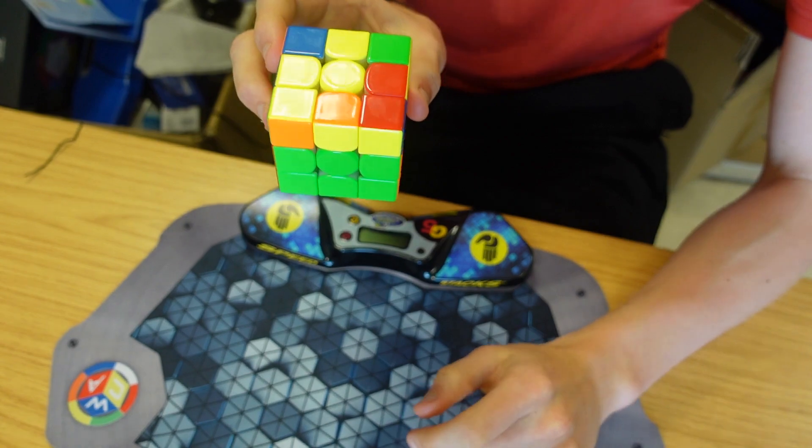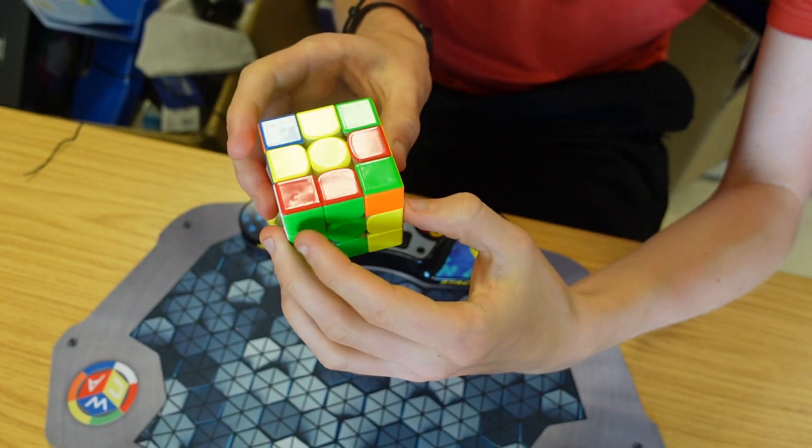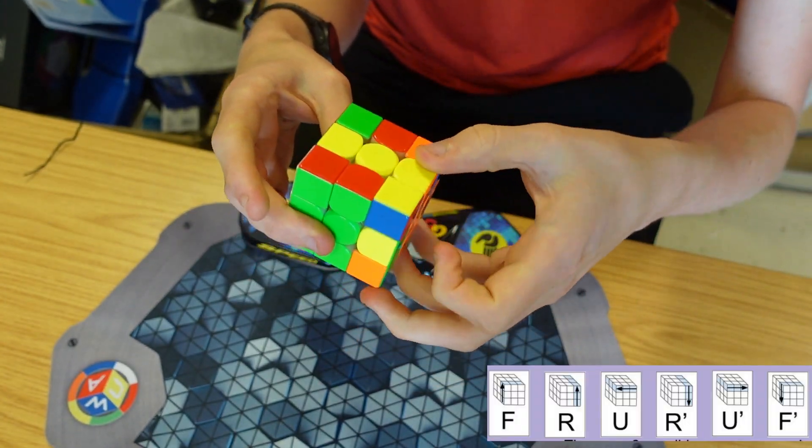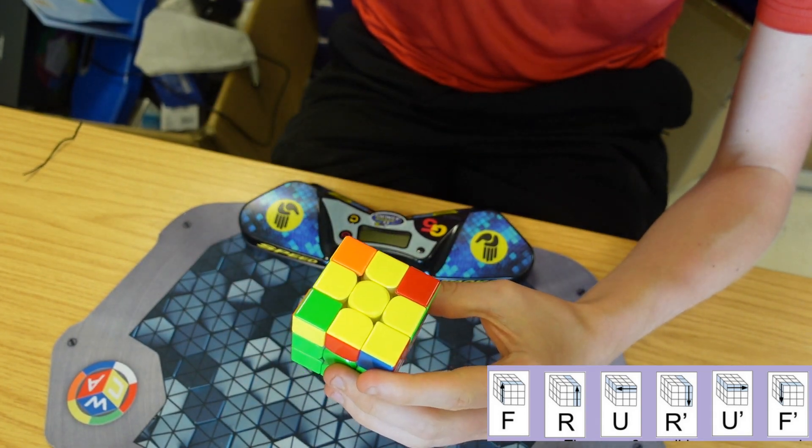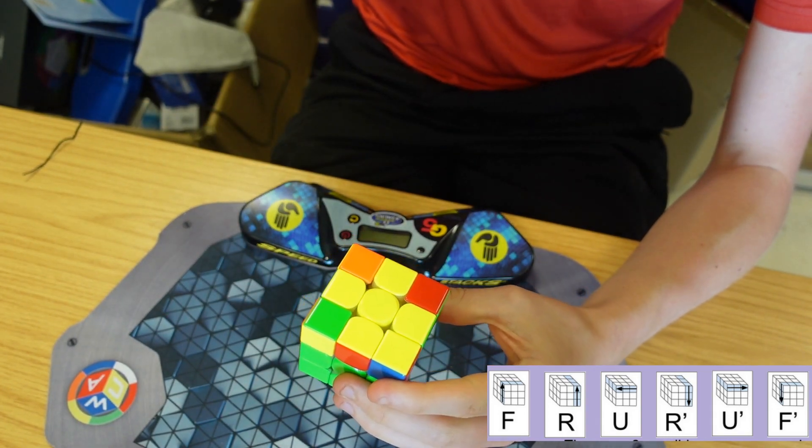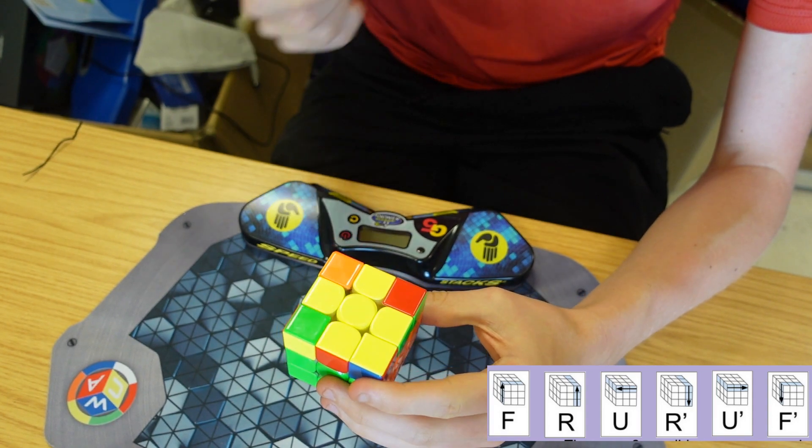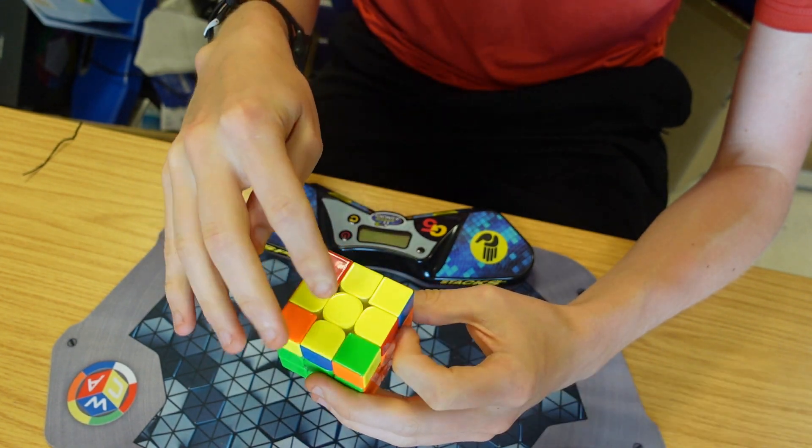Then we move on to the last layer where we need to get a cross on the top. We do that by doing that algorithm once, or in this case twice, sometimes three times.